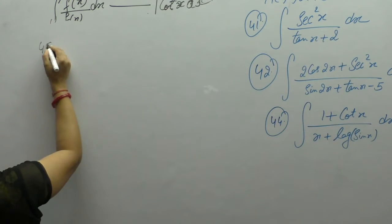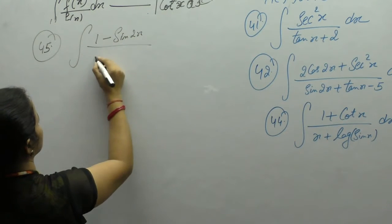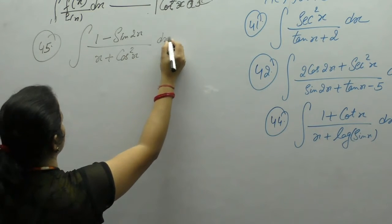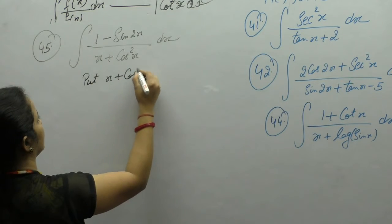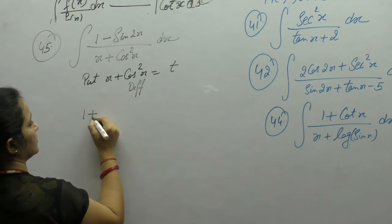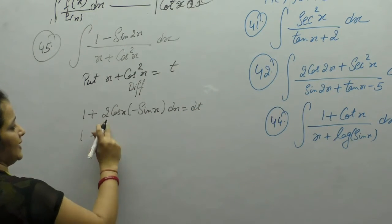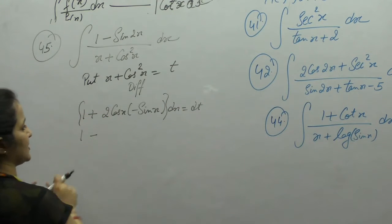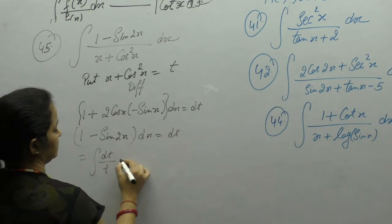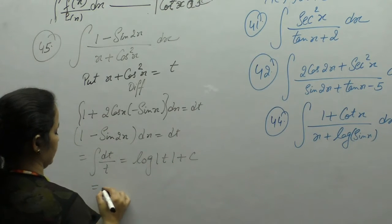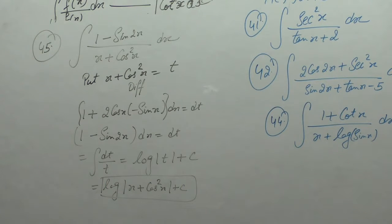Next question is integration of (1 - sin 2x) upon (x + cos²x). Derivative of x is 1. Put the denominator as t: derivative of x is 1, cos²x gives 2 cos x, and derivative of cos is minus sin x. So 1 minus 2 sin x cos x, which equals 1 minus sin 2x. Therefore 1 minus sin 2x dx = dt, giving dt upon t. Integration of 1/t is log of t, and t is x + cos²x, so the answer is log of (x + cos²x) plus c.